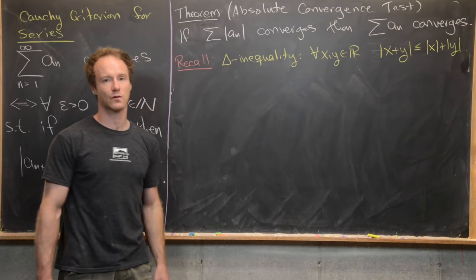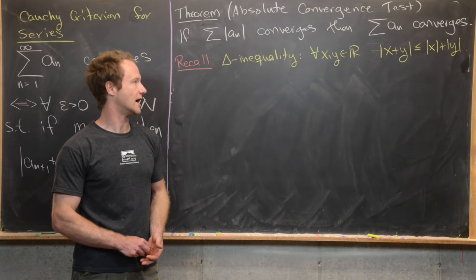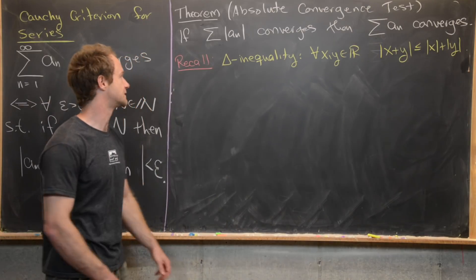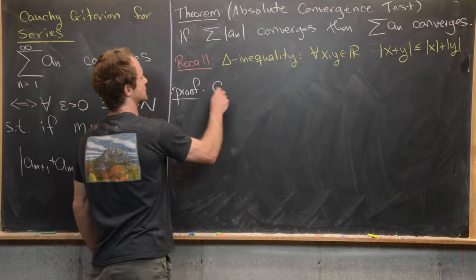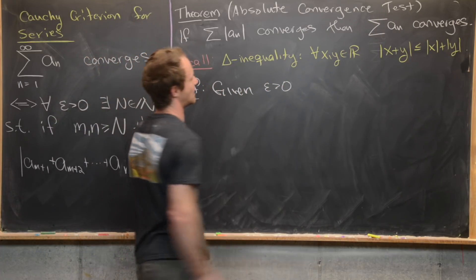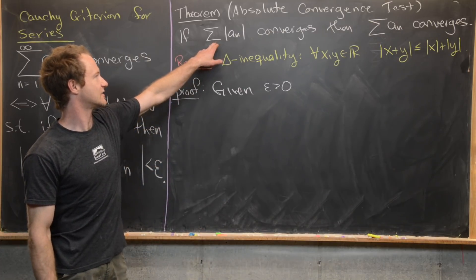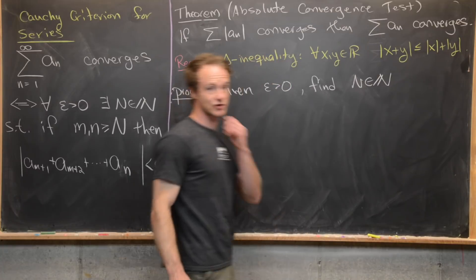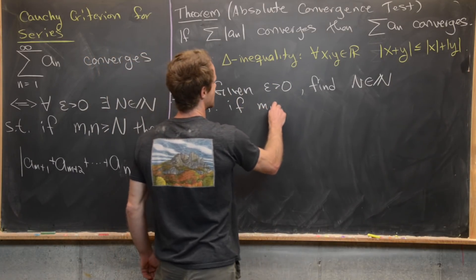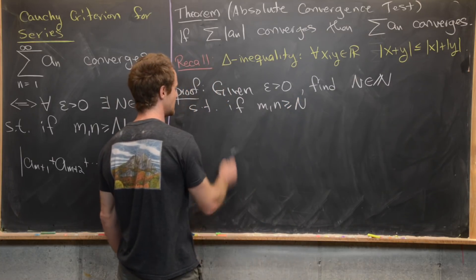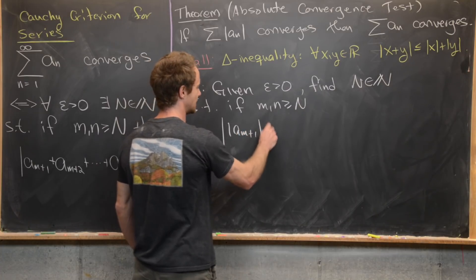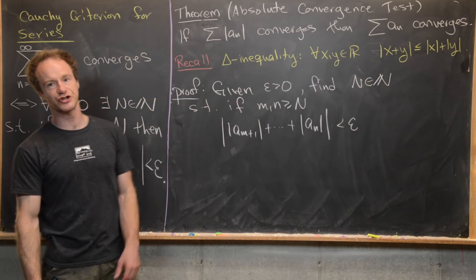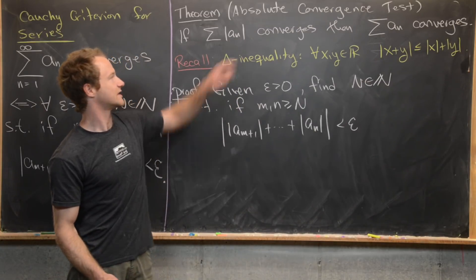For this proof we use the triangle inequality, which says for all real numbers x and y, |x + y| ≤ |x| + |y|. This is an extremely common tool in real analysis proofs. Given epsilon > 0, we use the fact that the series of |a_n| converges to find capital N such that for m, n ≥ N, the absolute value of |a_{m+1}| + ... + |a_n| is less than epsilon, by applying the Cauchy criterion to the series of absolute values.